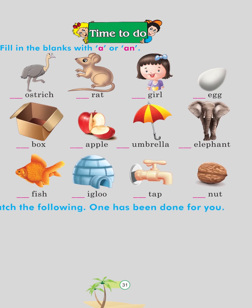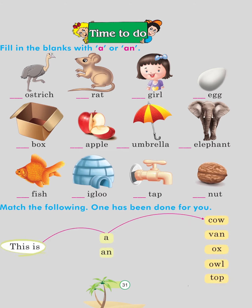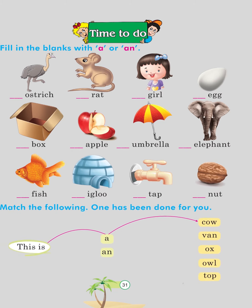Match the following — one has been done for you: This is a cow. This is a van. This is an ox. This is an owl. This is a top.